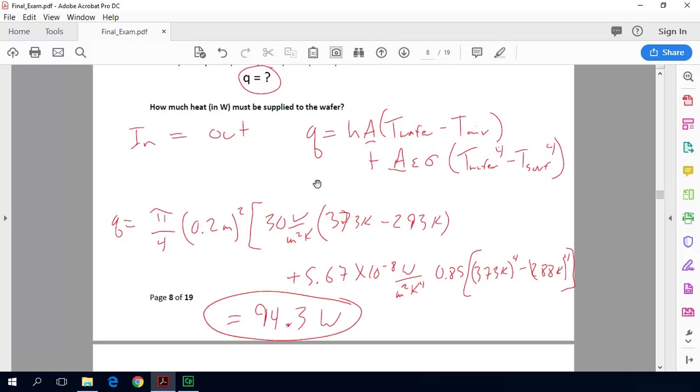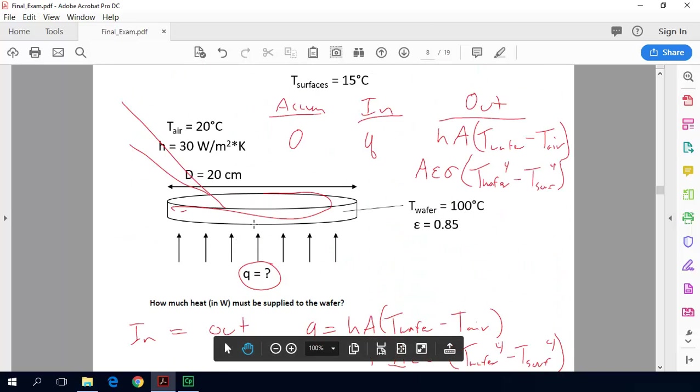So it all starts by just doing an energy balance, thinking how is energy getting in and how is energy getting out. So out is going to happen by a couple of different modes, by convection, which is described by Newton's law of cooling, and then by radiation, which is described by the Stefan Boltzmann law. And because it's a small object that's gray in its large surroundings, we can treat those surroundings as black.